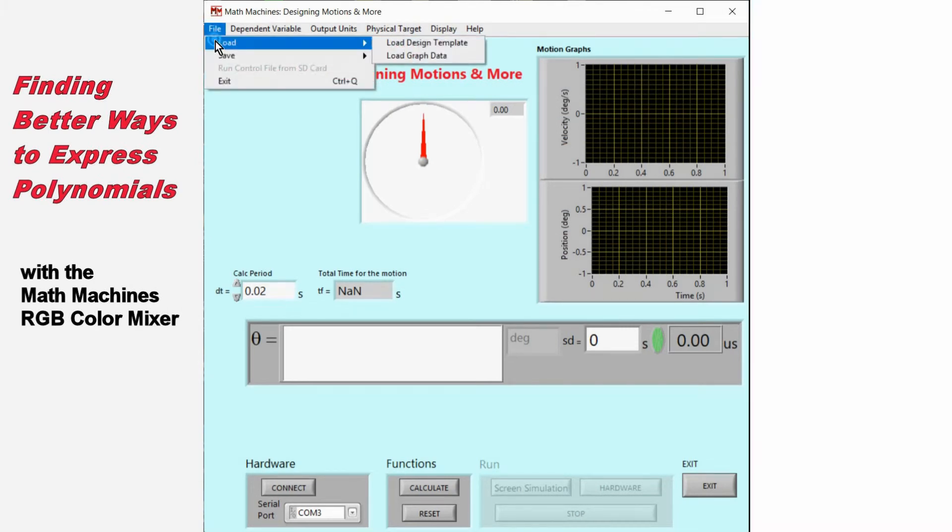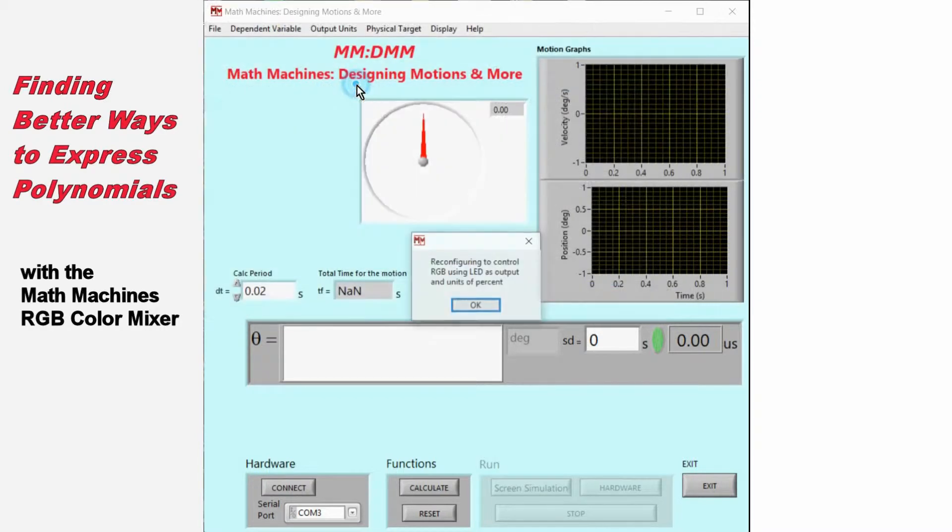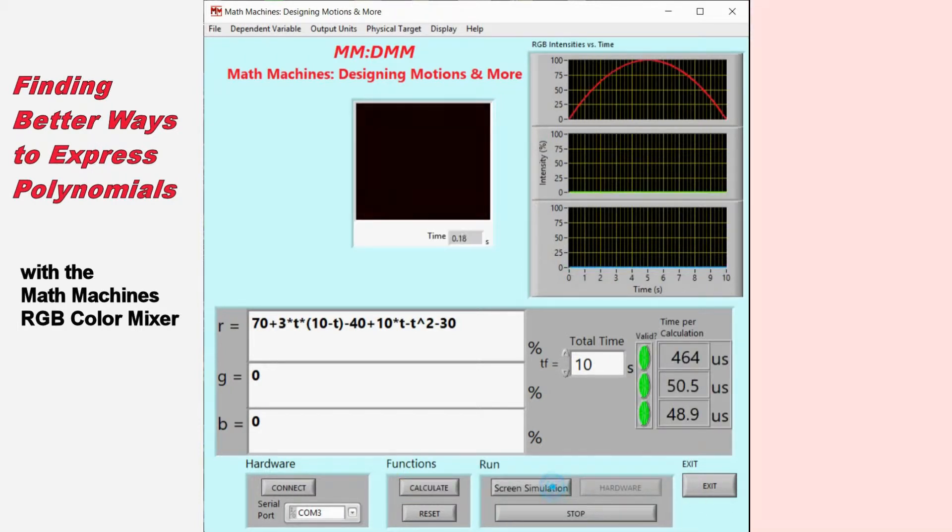We load a task which we have saved as BetterPolys001. The only difference between this and other tasks in the series is the expression which appears for the red component of our RGB display, and sometimes the total time for which the function will be active. We can display the graph and we can also run the simulation on screen.